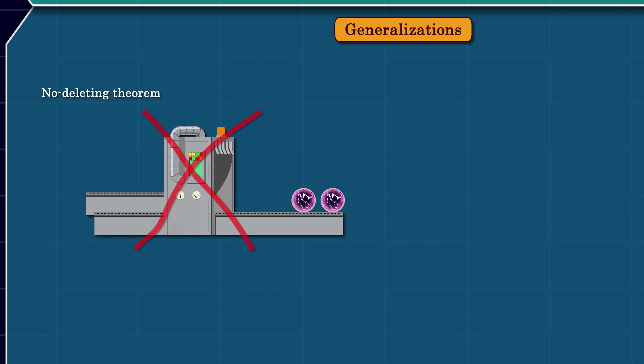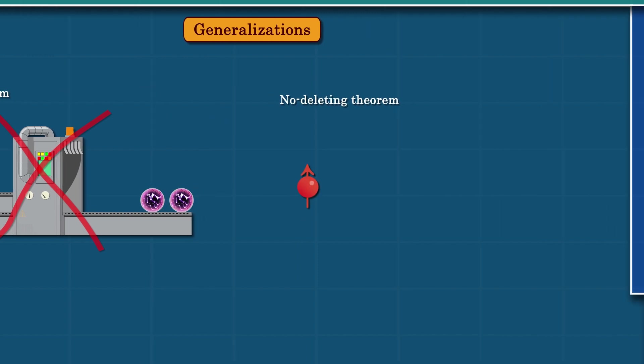One can generalize the no-cloning theorem to the no-broadcast theorem. If you have the entire quantum system, we call it a pure state. We just proved that we cannot clone an arbitrary pure quantum state. But how about if you have only a part of the entire quantum system? This part is called mixed state. It turns out that you cannot clone a mixed quantum state either. This generalization is called the broadcast theorem.